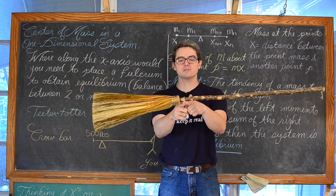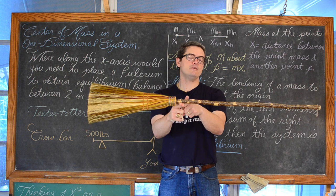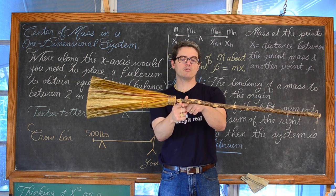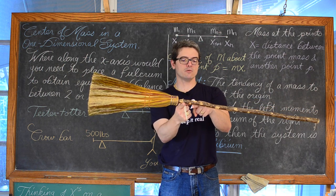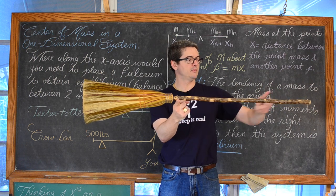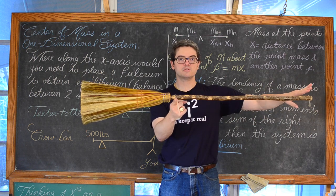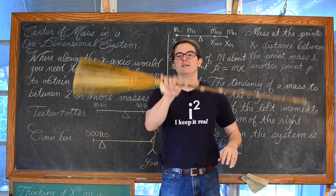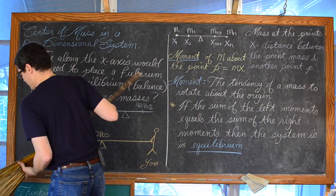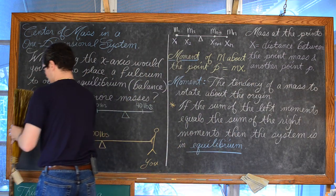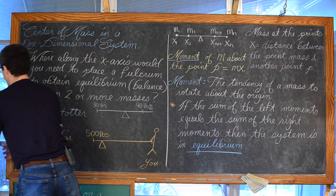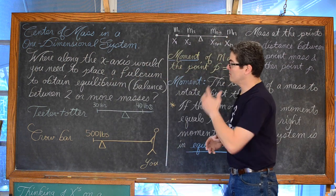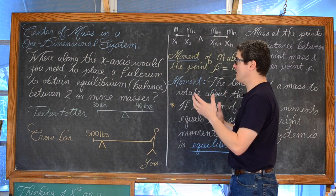Now this system is in equilibrium, and the lighter end of this broom needs to be quite a bit farther away from the fulcrum to stay in balance or to stay in equilibrium. So that's what I'm going to try and explain now — how to find, mathematically, the location of that fulcrum to get the one-dimensional system in balance or in equilibrium.